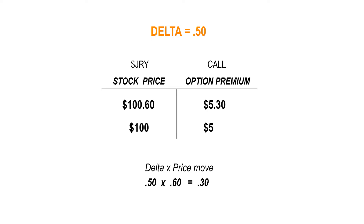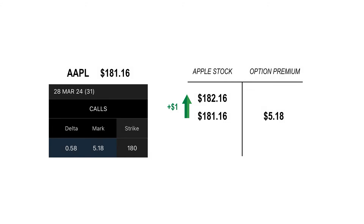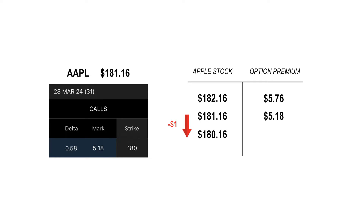Let's check out a real example. So this was Apple last week and the price was at $181.16. Let's say I want to buy a call option on it. In the options chain, I can see the strike price — the price I'll have the right to buy Apple at — and then I have the mark, which is the cost I'll have to pay to have that right. And here I added the delta. So if I buy this $180 call option, the delta shows $0.58. So if Apple stock goes up a dollar to $182.16, the value of my call option goes up by the delta, which comes out to $5.76. Or if the price drops a dollar to $180.16, my call option goes down by the delta to $4.60.